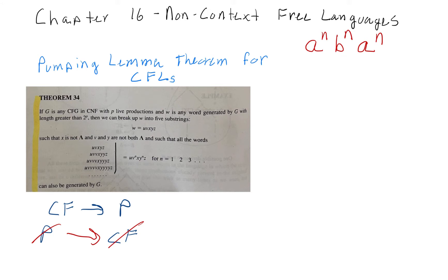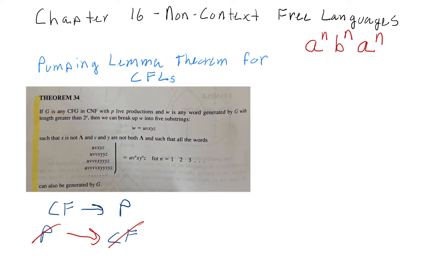If we have a context-free grammar in Chomsky's Normal Form — we're going to use Chomsky's Normal Form as part of this — then we have to be able to pump it. Instead of breaking the string into three parts like with regular languages, we need to break it into five different substrings.